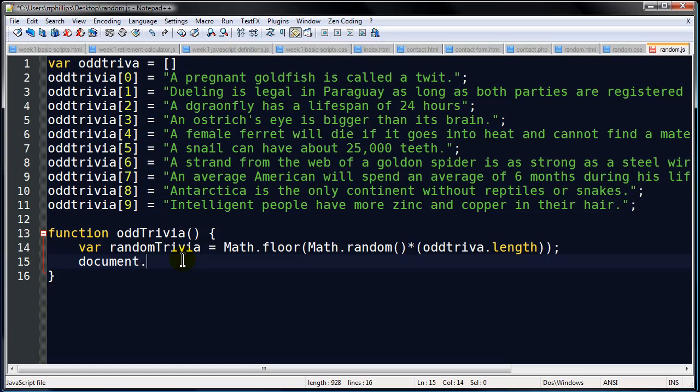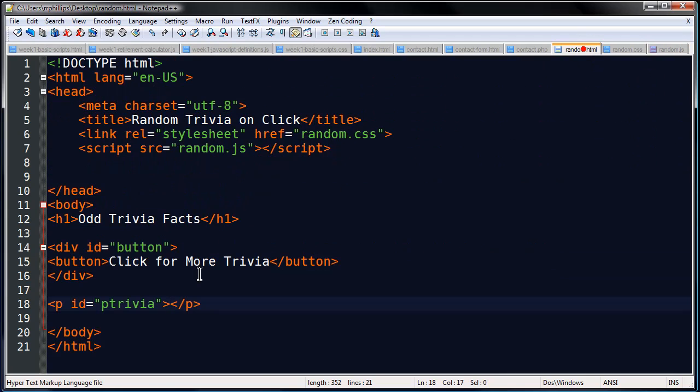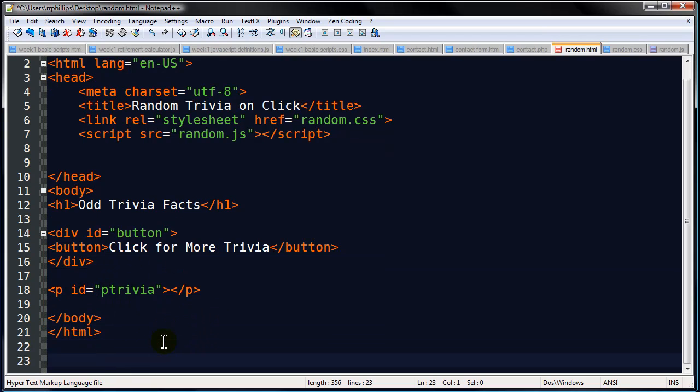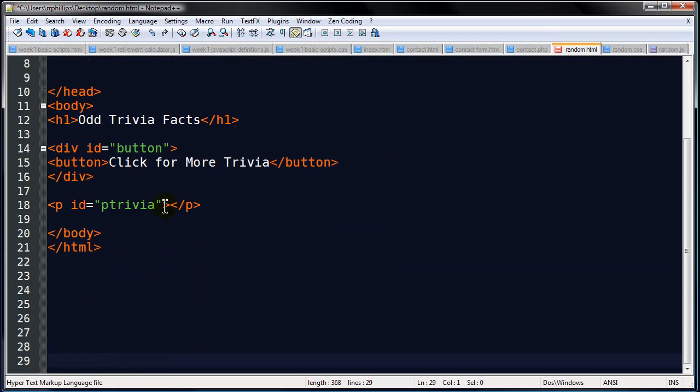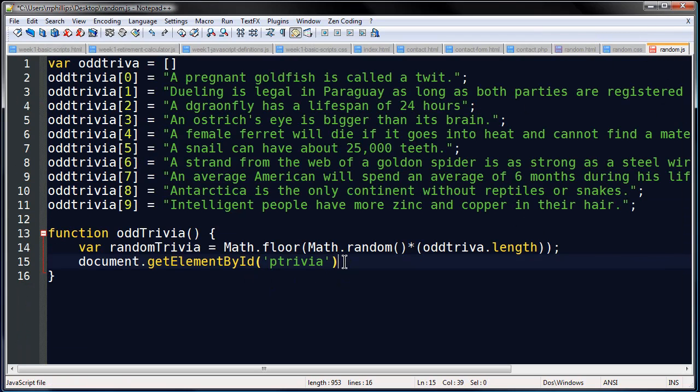So I'm going to write document.getElementById('ptrivia'). Now by the way, ptrivia is the ID of my paragraph. Let me scroll this up just a second here. So I have an empty paragraph with ID ptrivia. So my JavaScript is referring to that ptrivia.innerHTML is going to be equal to oddtrivia[randomTrivia].